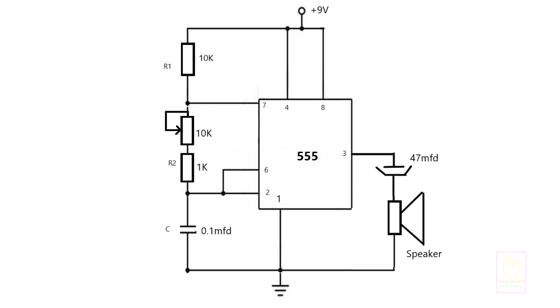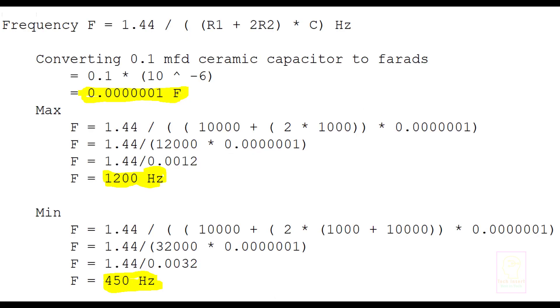Basically this is an astable multivibrator circuit whose frequency can be identified by a human ear. This is the frequency calculation formula. You can see this circuit can generate a frequency of maximum 1200 Hertz and a minimum of 450 Hertz.